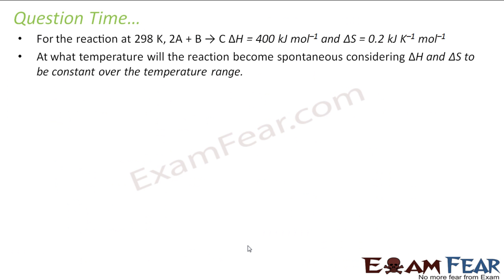Let us take one more reaction. For the reaction at 298 Kelvin, 2A plus B gives C. Delta H is 400 kilojoule per mole and delta S is 0.2 kilojoule per mole. At what temperature will the reaction become spontaneous?